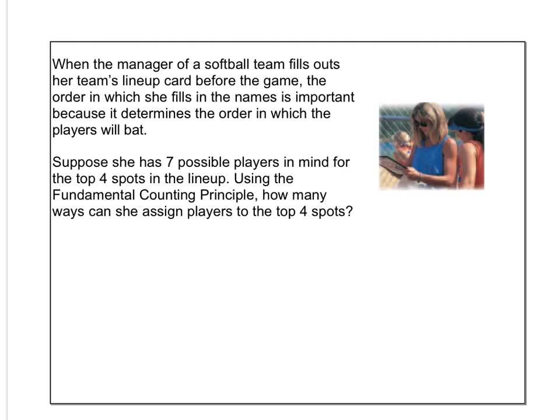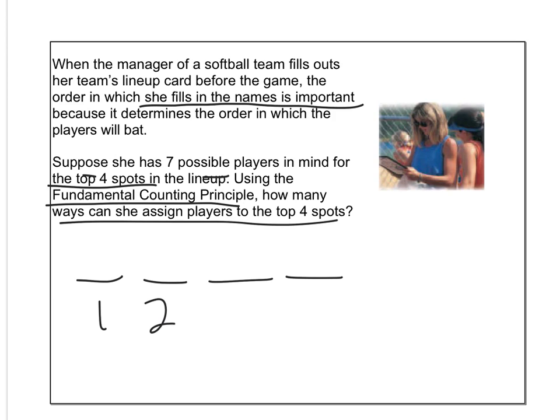So think about it this way. Manager of a softball team fills out the team's lineup card before the game. The order in which she fills the names is important. Suppose she has seven possible players for the top four spots of the lineup. Using FCP, how many different ways can she assign the four top spots? So lead off, second, third, clean up. Well, you got seven choices, then six, then five, then four. So multiply together, that's going to be 840 different possible combinations.